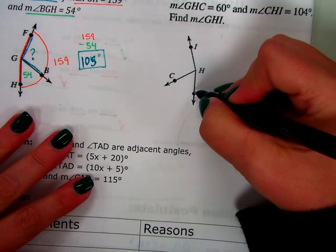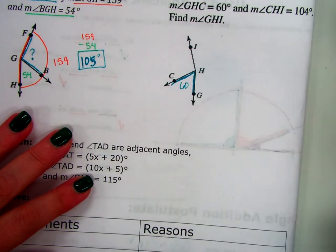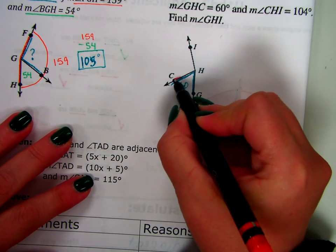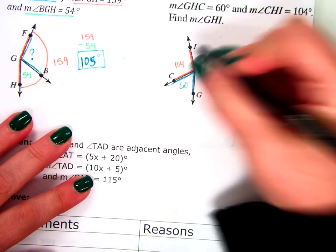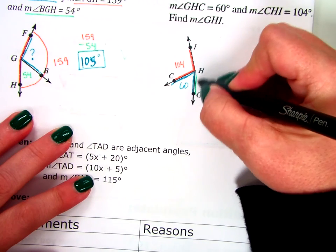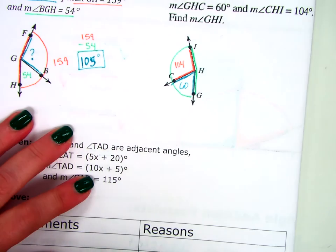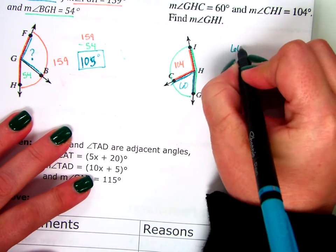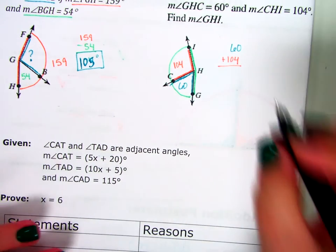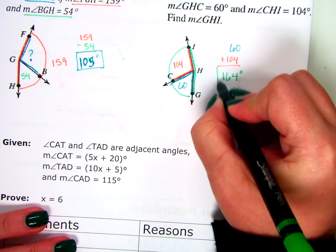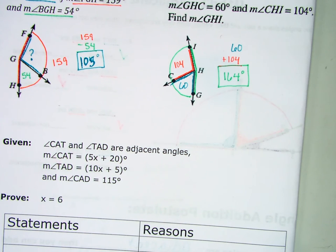Let's look at the next one before the proof. The measure of angle GHC. GHC is 60 degrees. The measure of angle C-H-I. C-H-I is 104 degrees. Find G-H-I. What do I do for this one? Do I subtract or add? Add. So, I'm going to do my 60 degrees plus my 104 degrees. And that's going to give me 164 degrees.